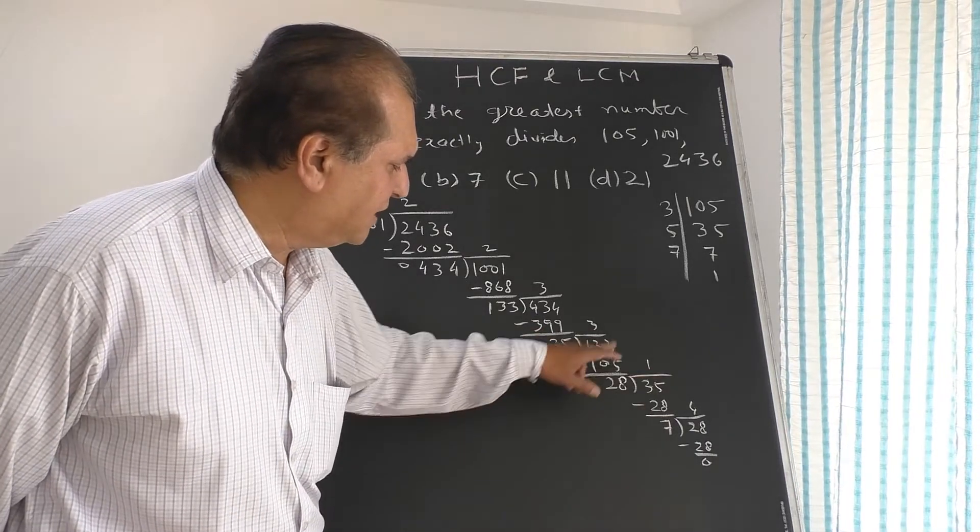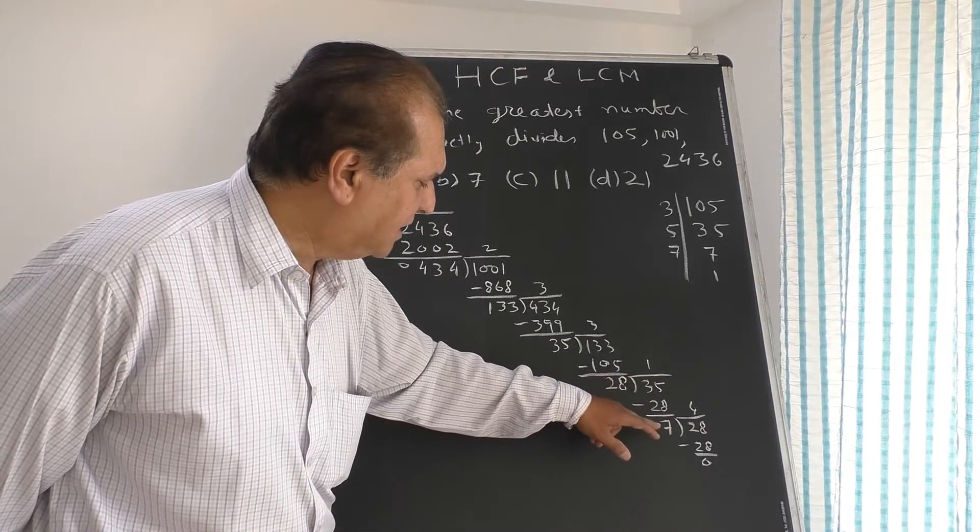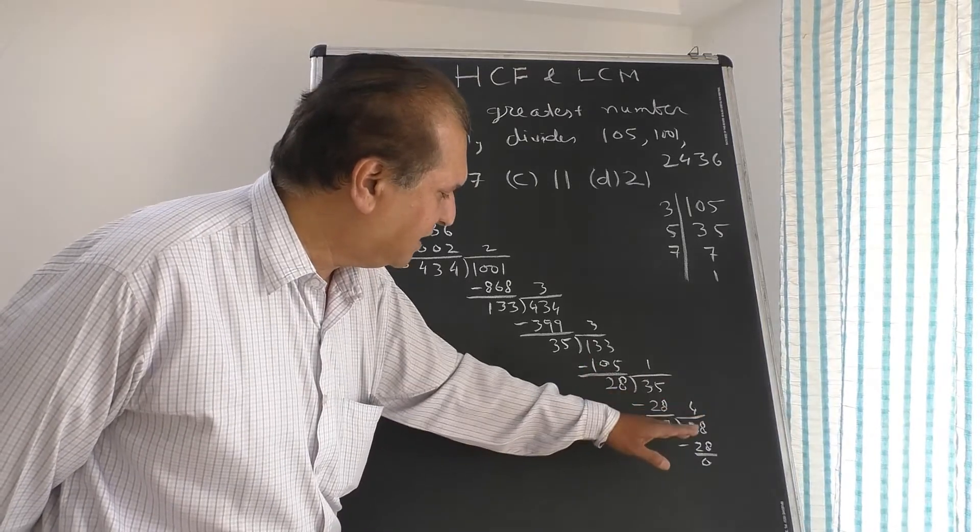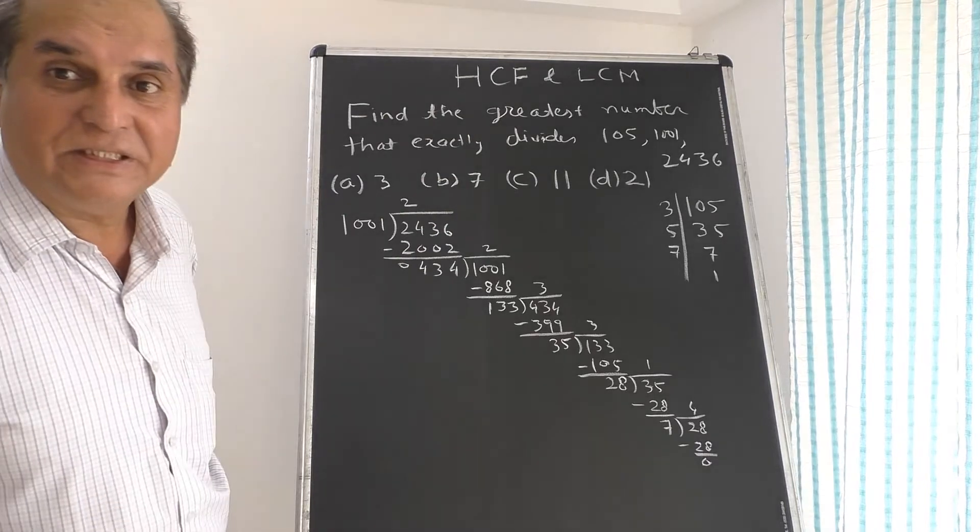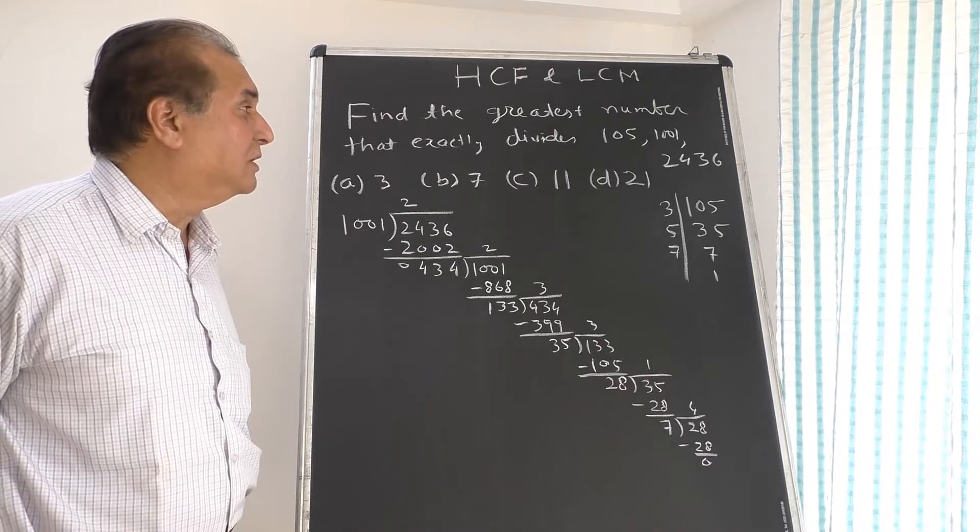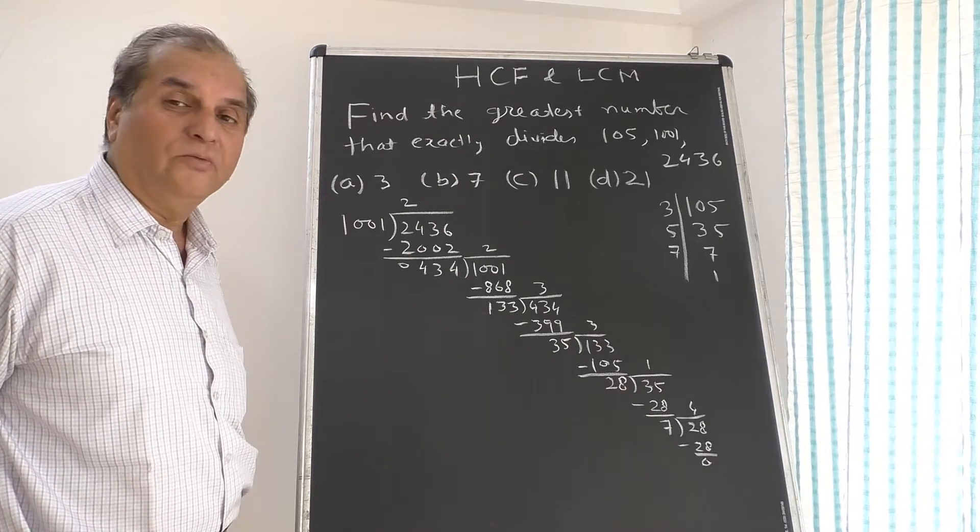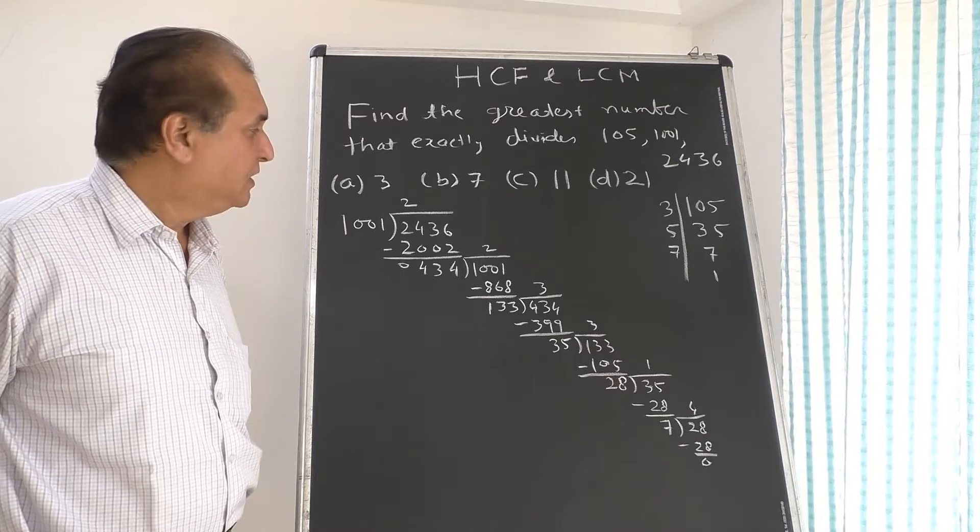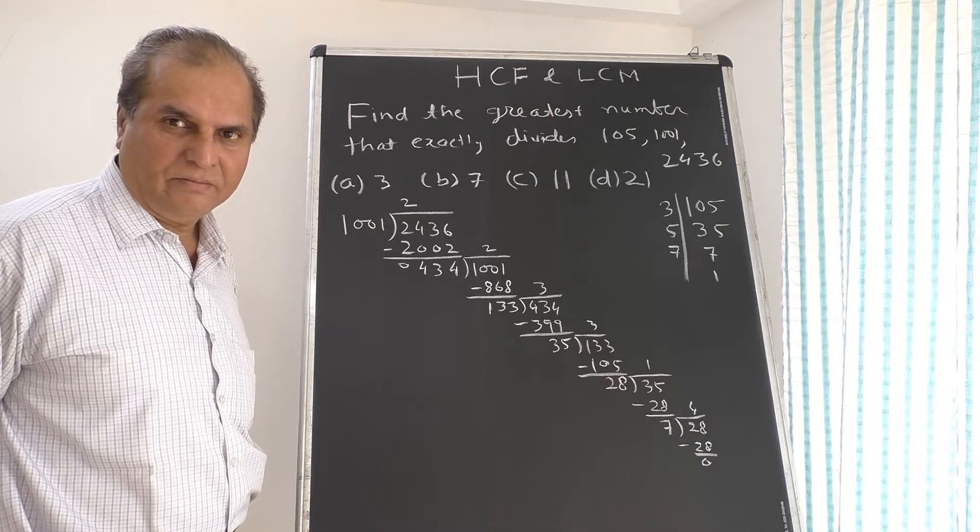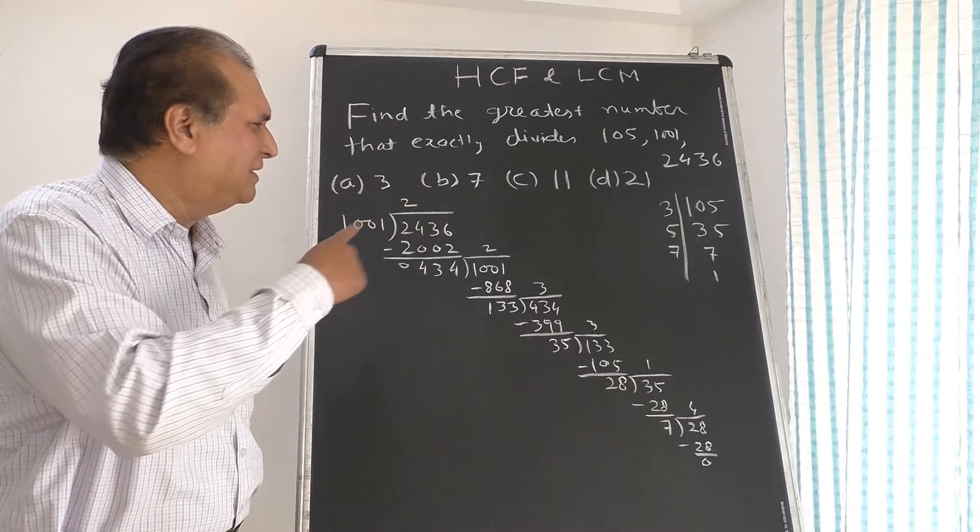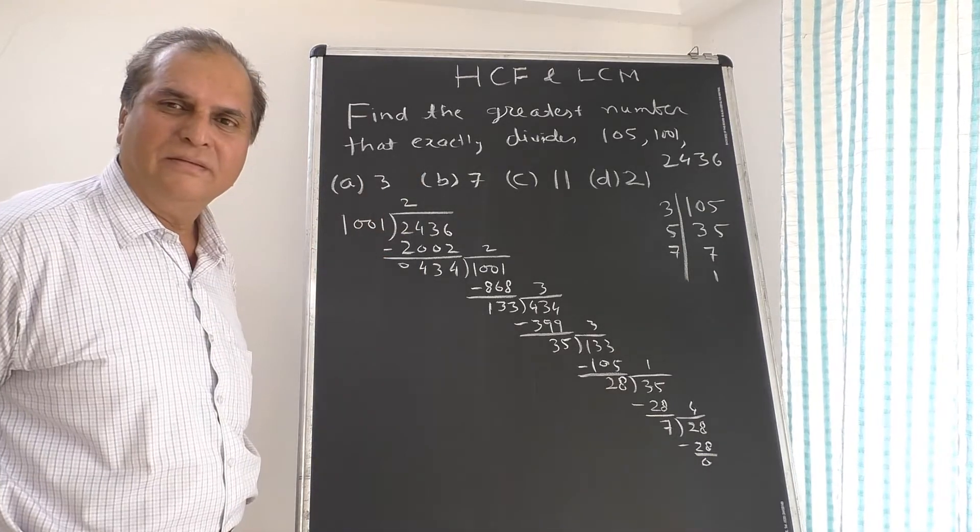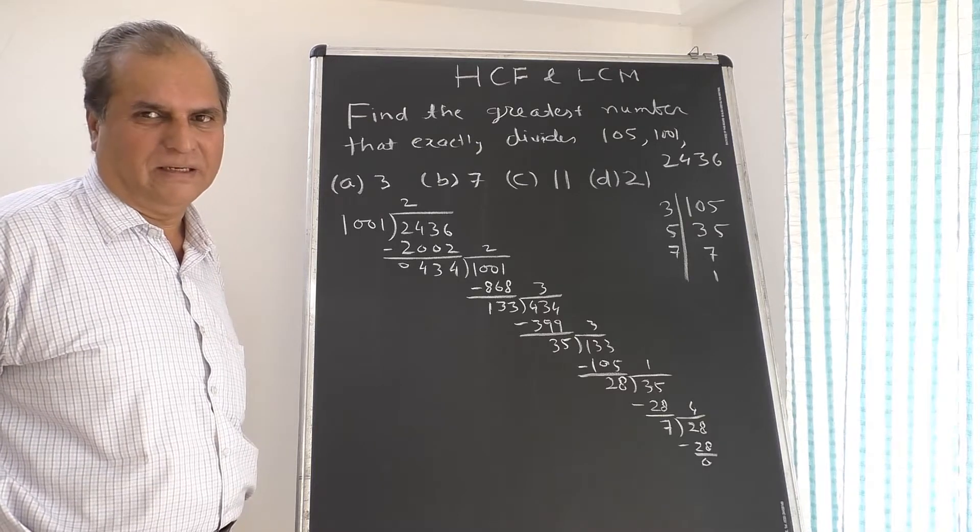Now 434 will again become dividend with remainder 133. 3 times 133 is 399, subtracting you get 35. Now 133 becomes dividend. 3 times 35 is 105, subtracting it is 28. Now 35 becomes dividend. 1 times 28 is 28, remainder is 7. Now 28 becomes dividend. 4 times 7 is 28, remainder 0. So 7 is the HCF of the two numbers 1001 and 2436. So 7 is the answer. Other tricks you can try by dividing by 3, 7, 11, 21, but this is confirmatory method.